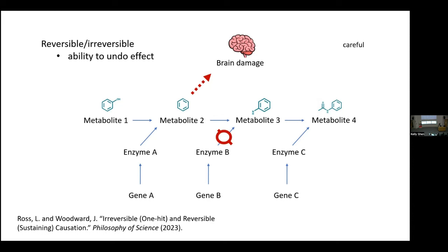In everyday life and in scientific contexts, we're very careful with causal relationships that are irreversible — we don't want to accidentally trigger them and produce permanent effects. This is why we have seatbelt laws, helmet laws, and poison control. We know that certain types of damage to the human body cannot be undone — death is irreversible. If a causal relationship is reversible, we're less careful; you're not worried about someone accidentally hitting a light switch.